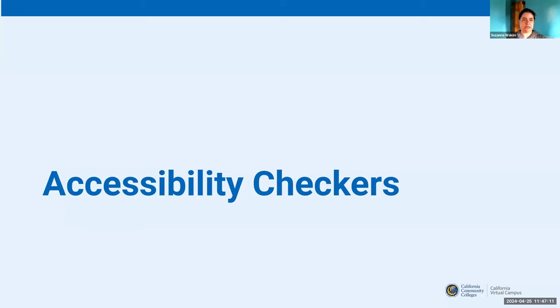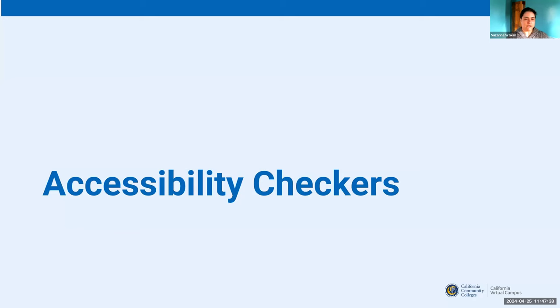I think I've addressed all of the questions in the chat. Please continue to post them and Karen will answer them. What we're going to move on to next was actually a question that was asked: if I find a document, how can I make sure it's accessible? That's where accessibility checkers come in. I would also encourage you, when you've created a document and you're done creating it — even if you've followed all the guidance — run the accessibility checker. I have yet to finish a document where I haven't missed an alt text or something. Just run the checker to double confirm you've done everything correctly.